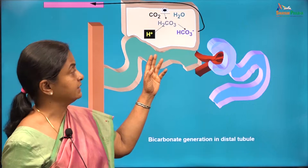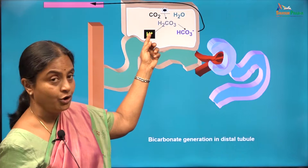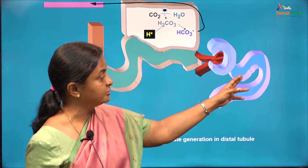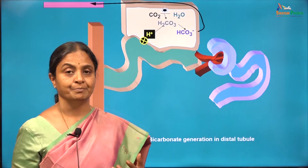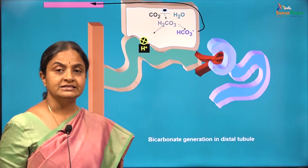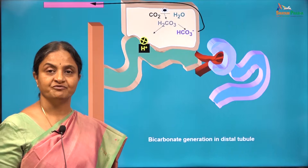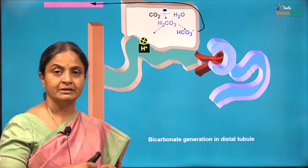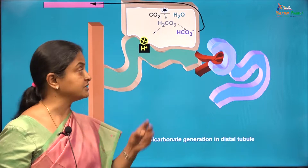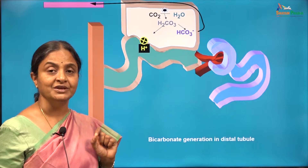Just like in the proximal tubular cell, if this reaction has to proceed, the protons formed have to be eliminated from the cell. In the proximal tubule, we had the sodium-hydrogen exchanger in the luminal border. In the distal tubule, we have a proton pump. There are two types of proton pumps: a V-type ATPase, which is a proton uniport, and a P-type ATPase, which is a proton-potassium antiport. Both types are found here, but the major proton pump is the V-type proton pump.